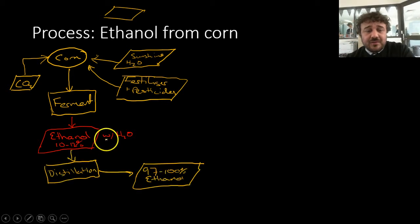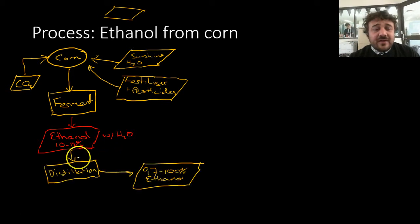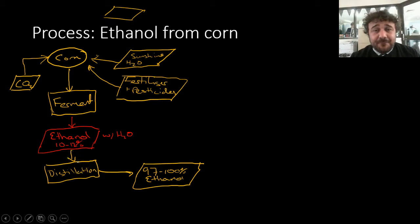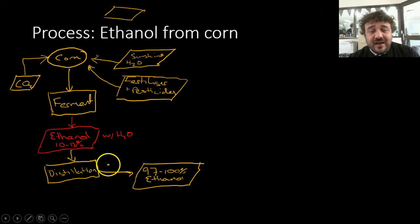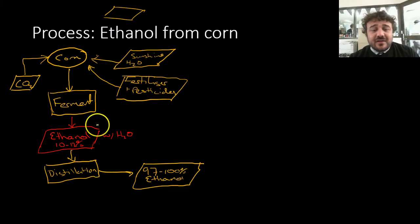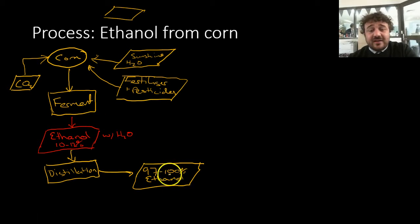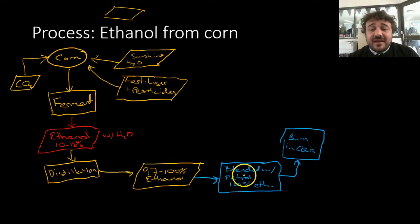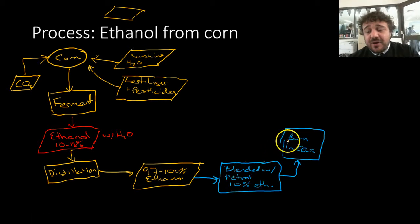That 10 to 12% is really important. It is then distilled, because fermentation stops at about 10 to 12% — that's where it kills off the yeast. We then distill it down and take the water out of it to give 97 to 100% ethanol. This is then blended with petrol to about 10% ethanol and burns in cars nicely.